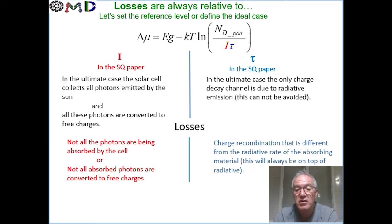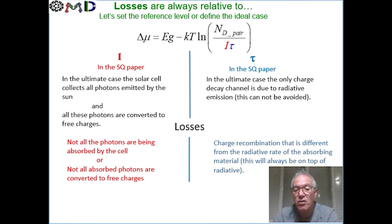And on the loss side, there is also charge recombination through traps or any other impurity or non-ideality in the material. These are always on top of the radiative emission, so there are extra losses. And the biggest problem is usually how to quantify these losses.